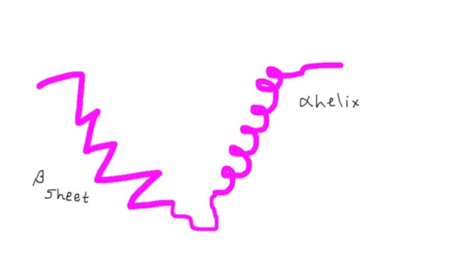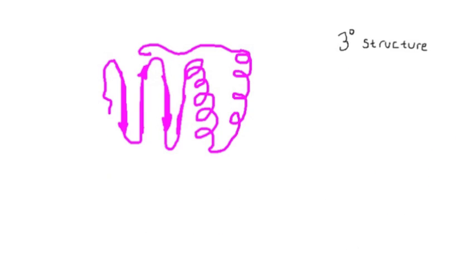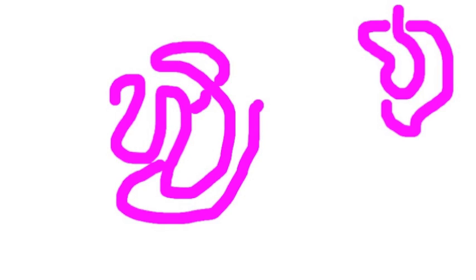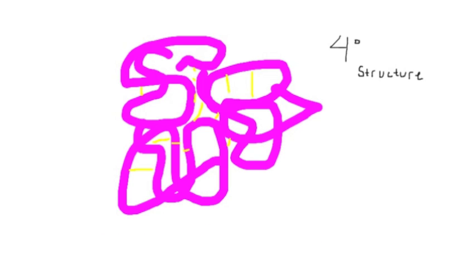Zooming up, we see the secondary structure, which consists of alpha helices and beta pleated sheets, and the tertiary structure, which consists of the protein folding on itself. And then we have the quaternary structure, which is multiple proteins, and finally we're back to the beginning.